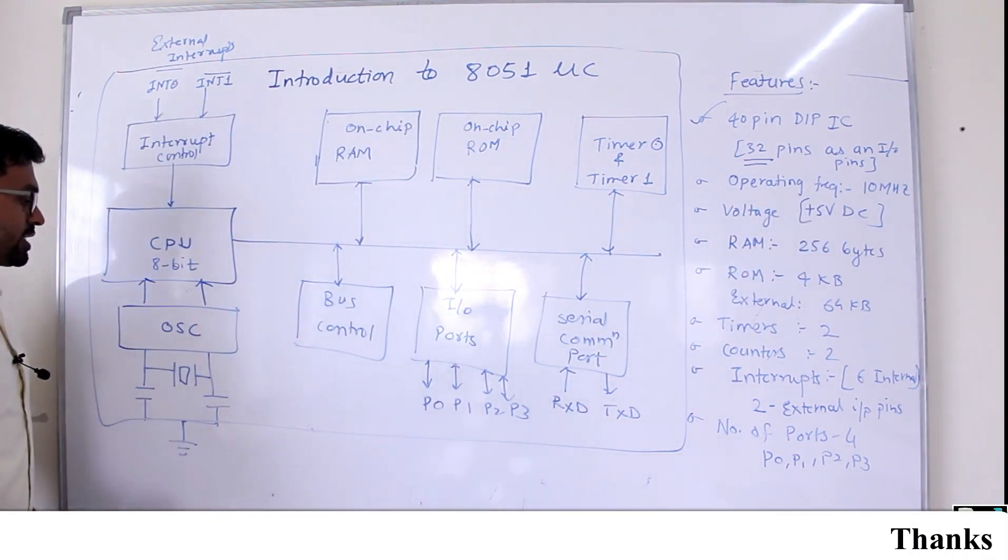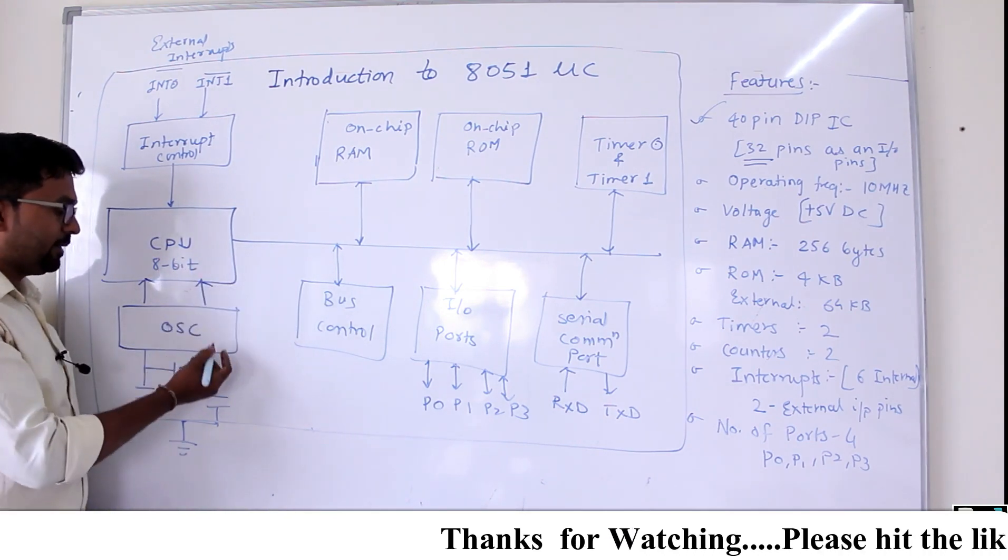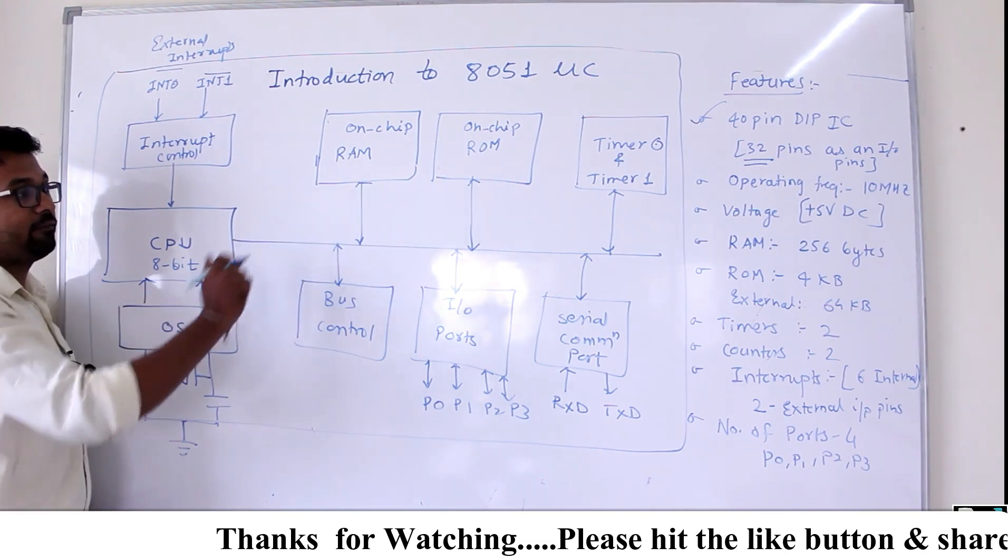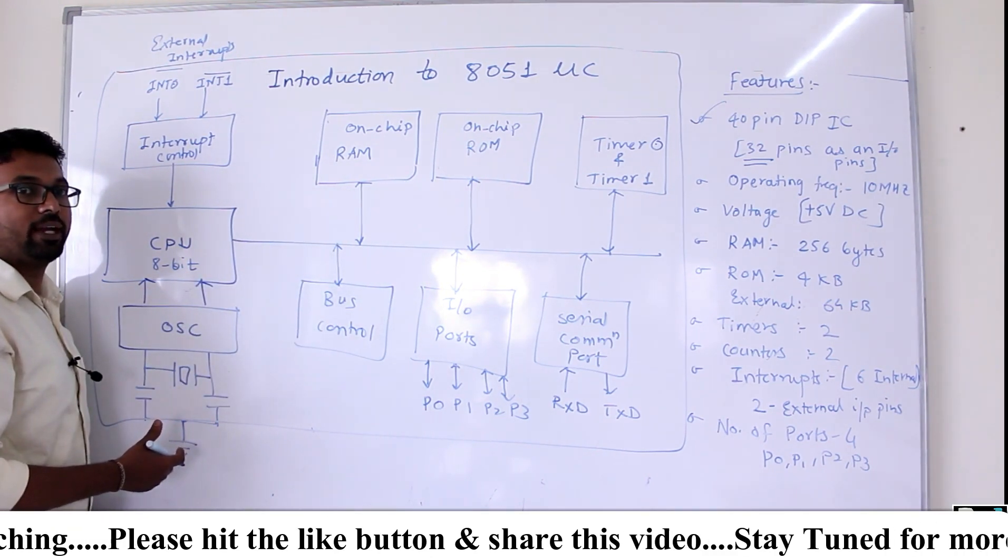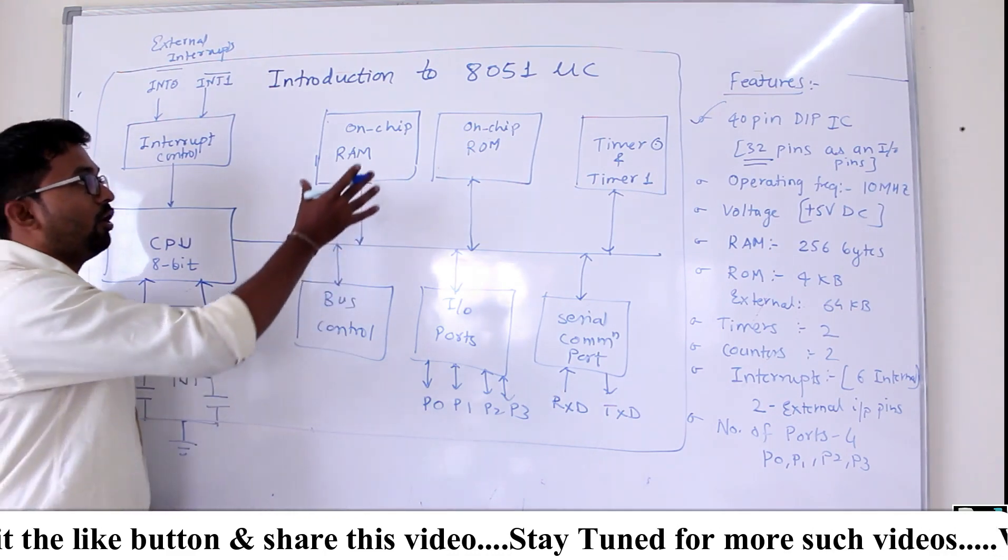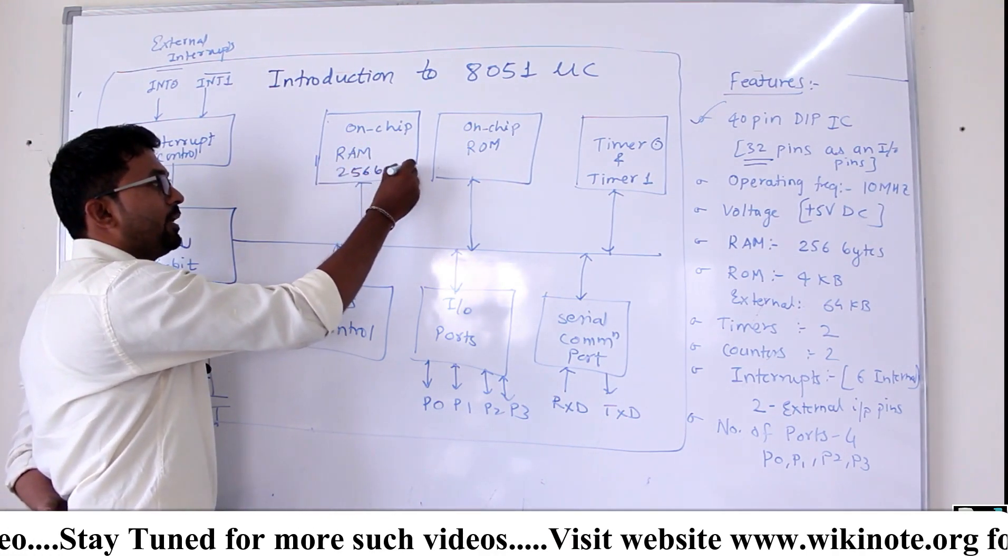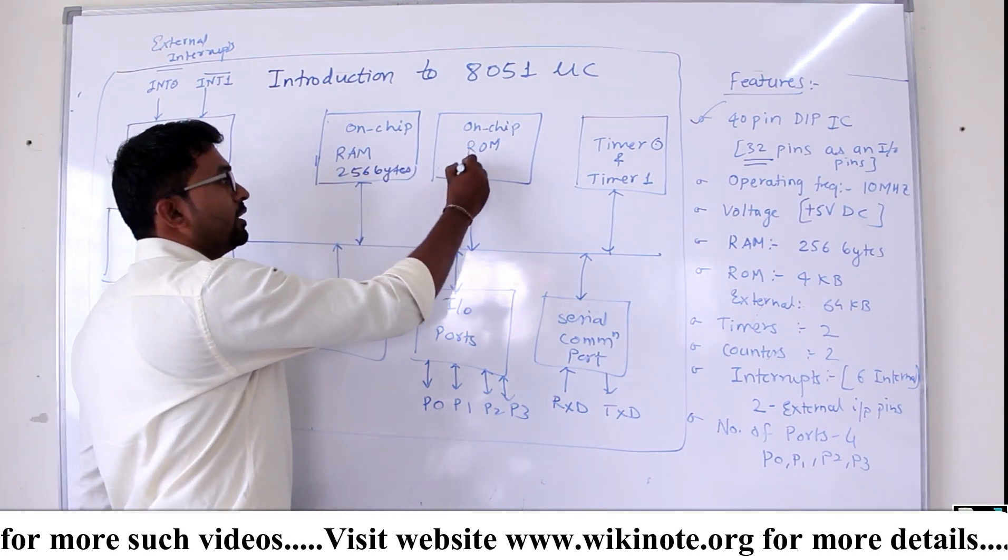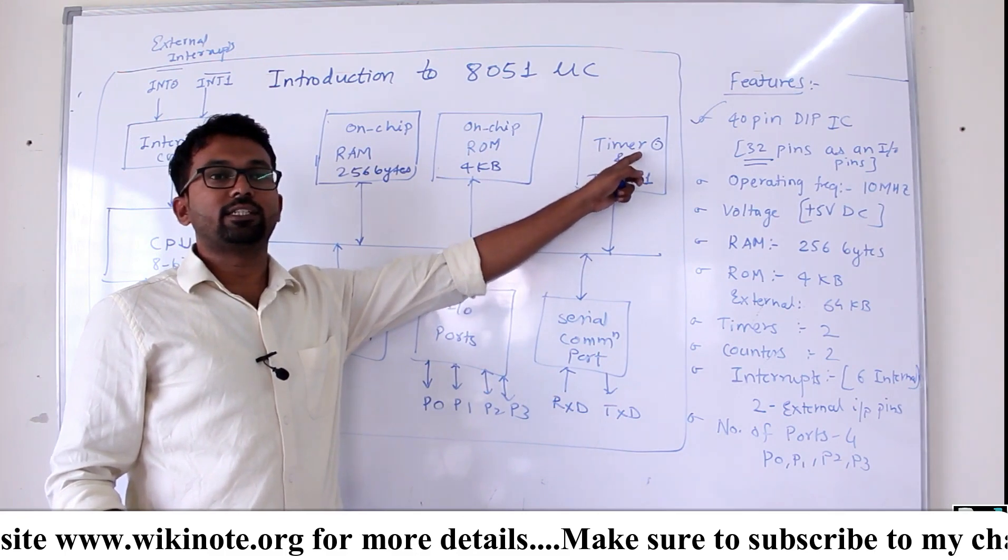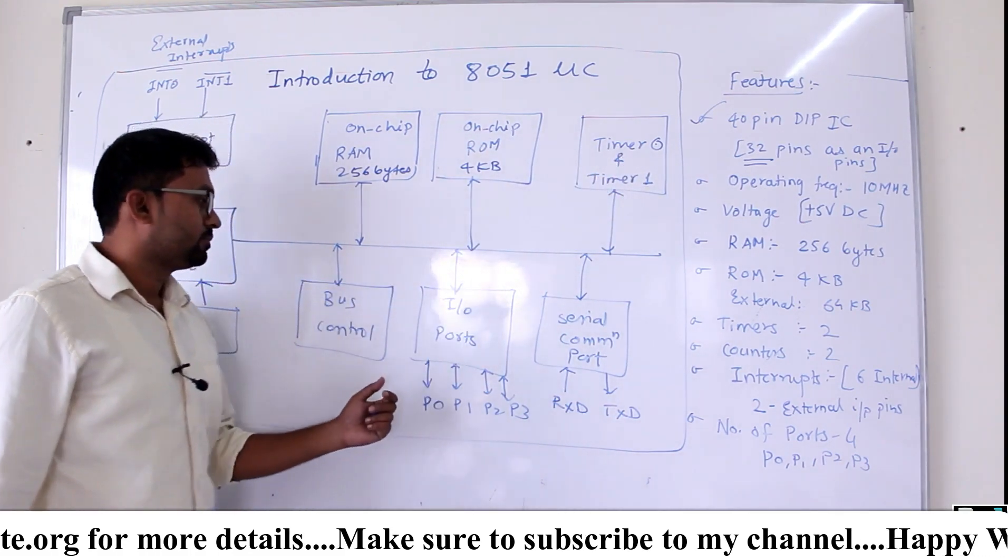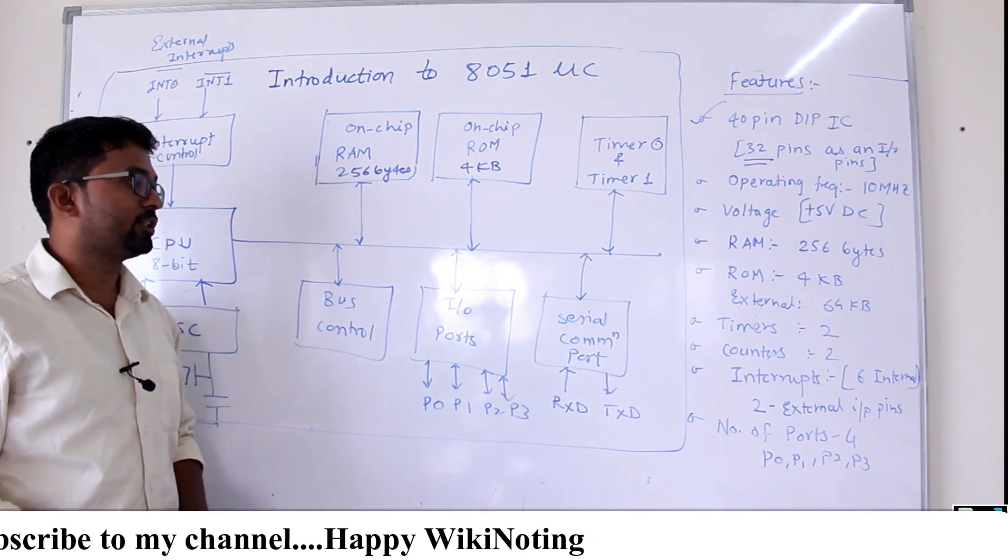The oscillator frequency is provided to the 8-bit CPU and the maximum operating frequency is till 10 megahertz or it may go till 20 megahertz. On-chip RAM is 256 bytes of memory. The on-chip ROM is 4 kilobytes. It has two on-chip timers, timer 0 and timer 1. It has bus control unit which looks after the address bus and data bus operations.